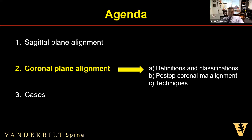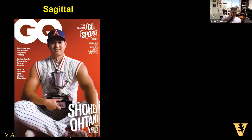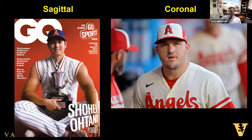My daughter was in a big Elmo stage but has moved on to Peppa Pig. Coronal plane deformity surgery is less talked about — some people say it's simpler, just line the spine up — but I'd argue it's equally complex. It's associated with more invasive surgery, high risk of rod fractures, and can be really hard to evaluate intraoperatively. In sports terms, the sagittal plane is like Shohei Ohtani — gets all the attention — but the coronal plane is like Mike Trout: arguably equally important but less celebrated.